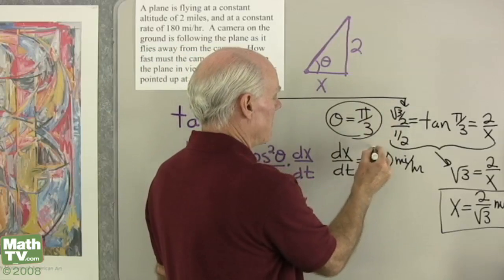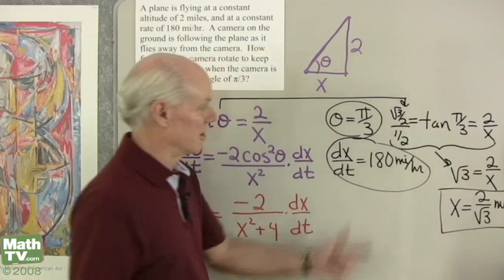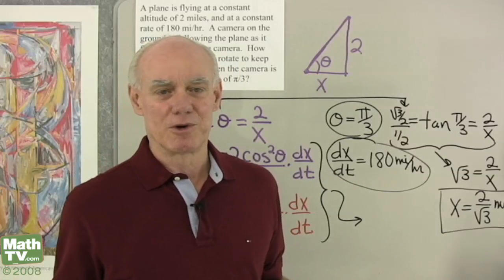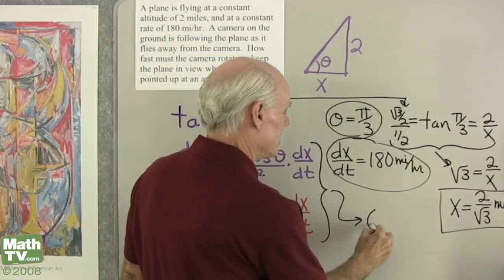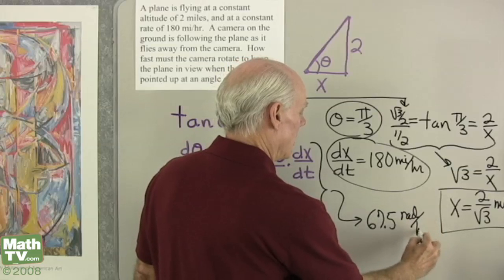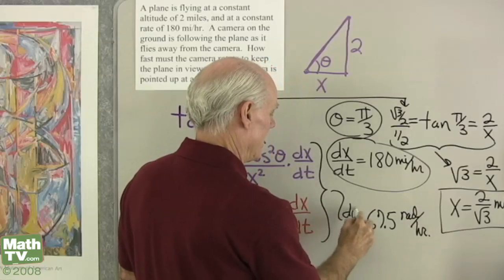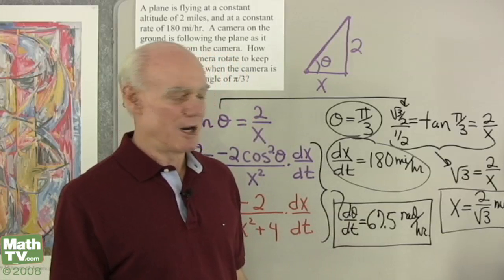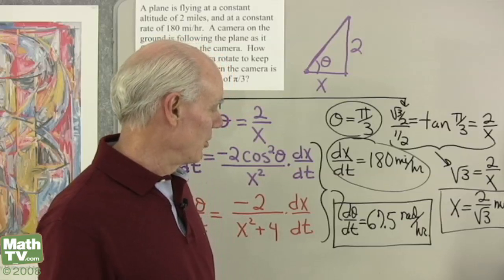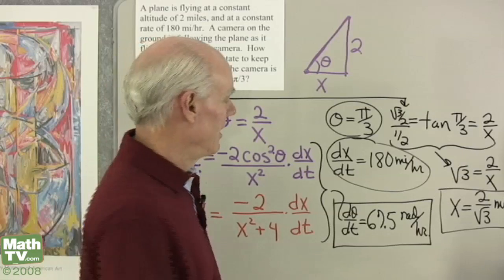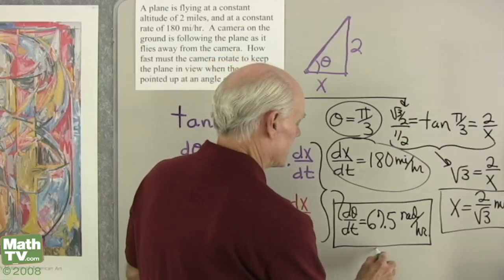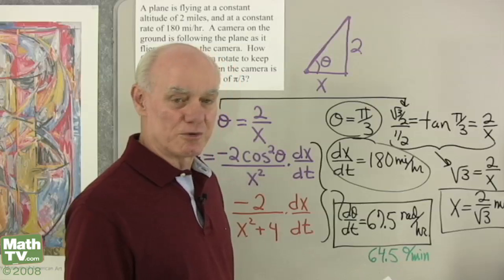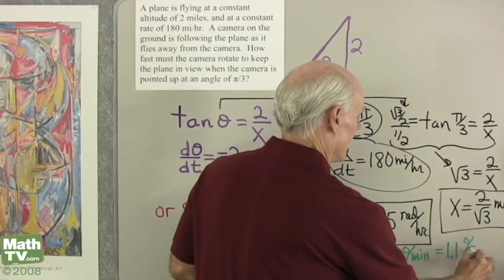Now I have theta, dx dt, and x — I can substitute into either formula. The result is d theta dt equals negative 67.5 radians per hour. Converting to degrees per minute gives about 64.5 degrees per minute, and converting further to degrees per second gives approximately 1.1 degrees per second.